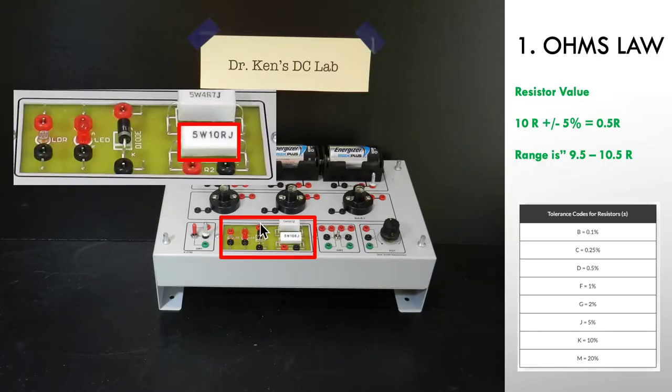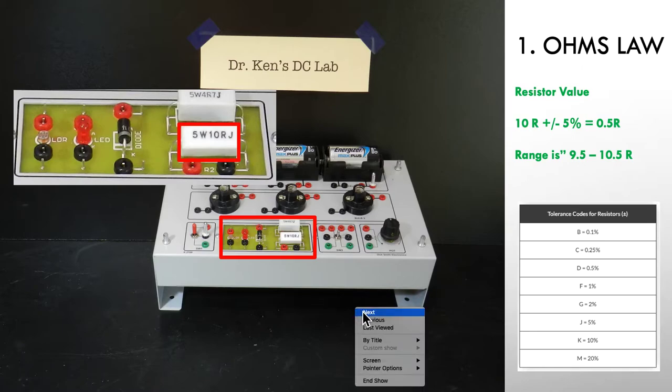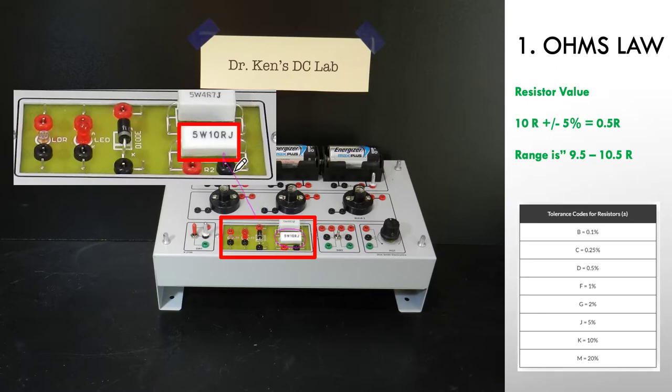Here's our little training rig that I'm using, and here's the resistor. I blew the picture up a little bit. We've got 5W meaning 5 watts, it's a 5 watt resistor that can handle 5 watts of power. It's 10R meaning 10 ohms, and the J is the tolerance.